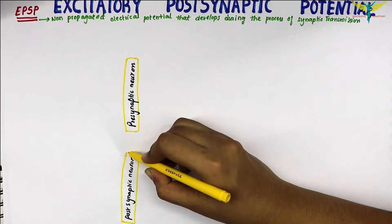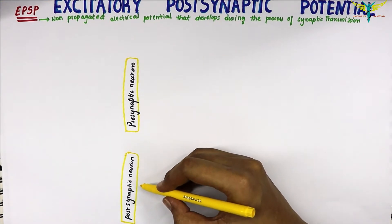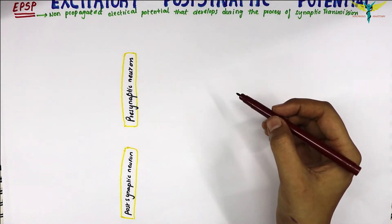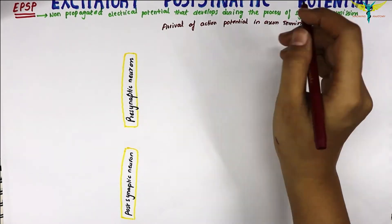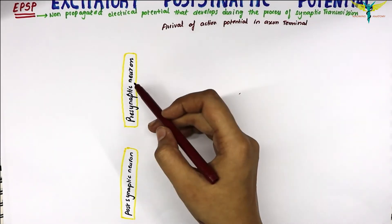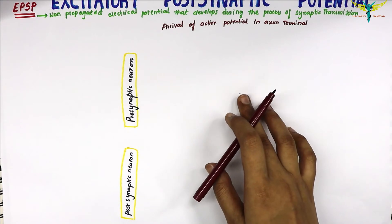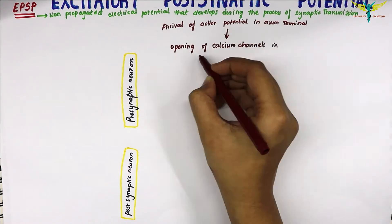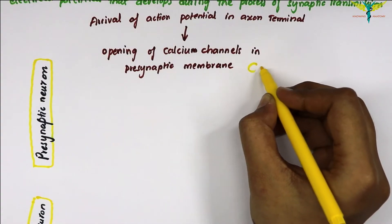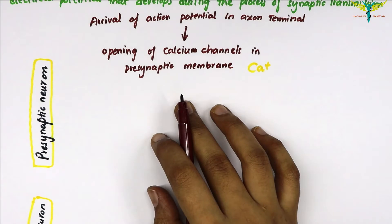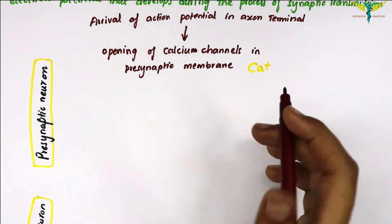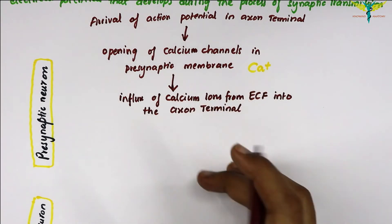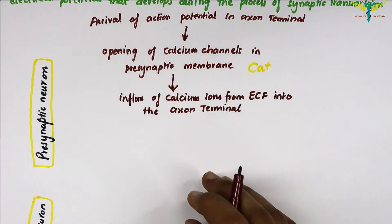Now let's learn about the sequence of events during synaptic transmission. This is the pre-synaptic neuron and the post-synaptic neuron. The first event is the arrival of the action potential into the axon terminal. When the action potential reaches the pre-synaptic axon terminal, the voltage-gated calcium channels at the pre-synaptic membrane are opened.